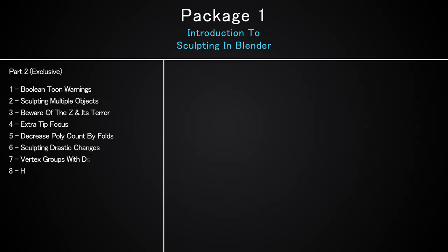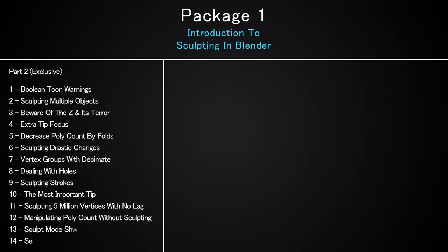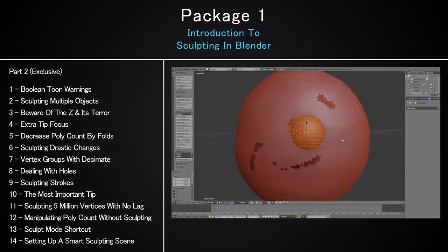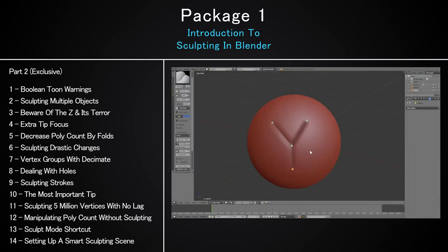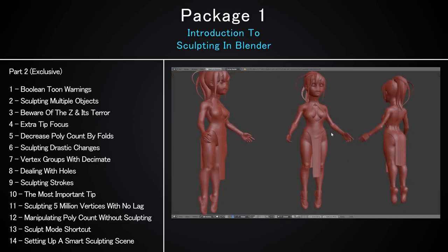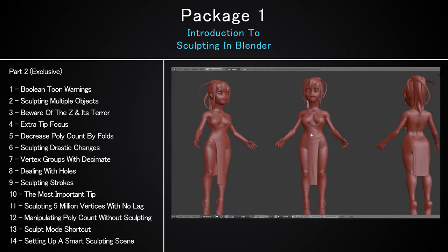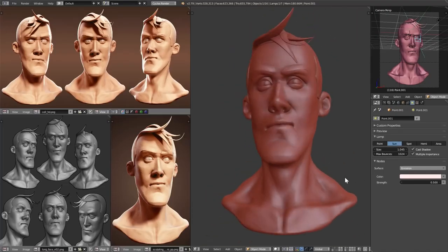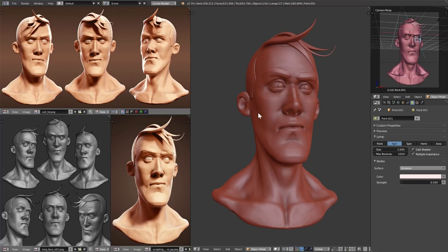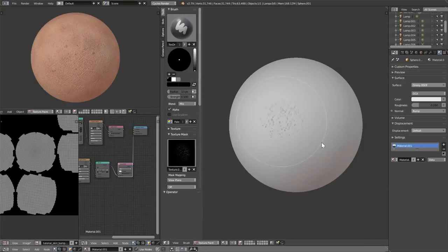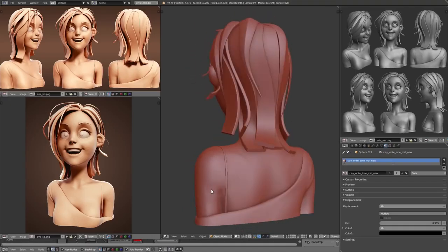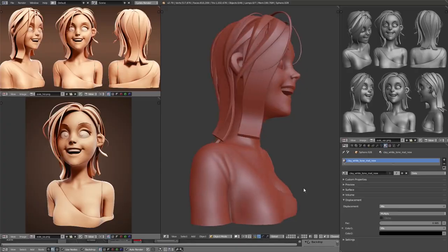Part 2 of the first package has a 14-part video ranging from sculpting tips, tricks, warnings, what to avoid, what to do, speeding up your process and tips on becoming a character artist. You will also get the scene files relevant to these tutorials including the blend files and the OBJ files for anyone who is not using Blender.